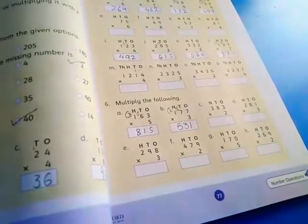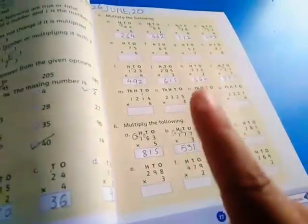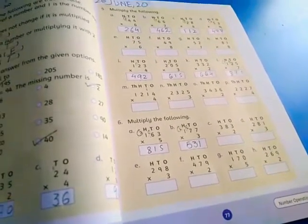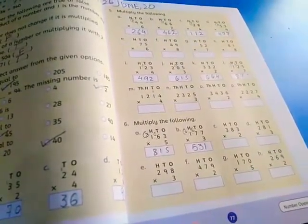Now you have to complete these 2 questions. Page number 77 is your homework. You have to do it in your book. Okay.